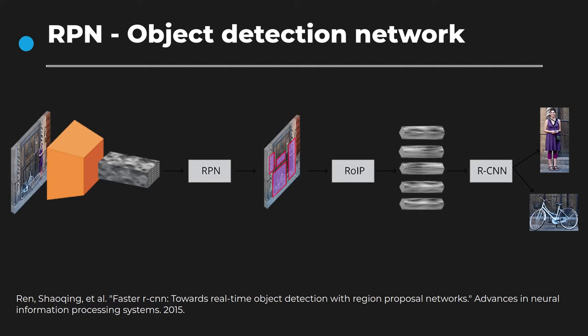This is the general idea behind region-proposal network approaches like Faster RCNN, which was one of the first end-to-end trainable models for object detection using only deep learning.